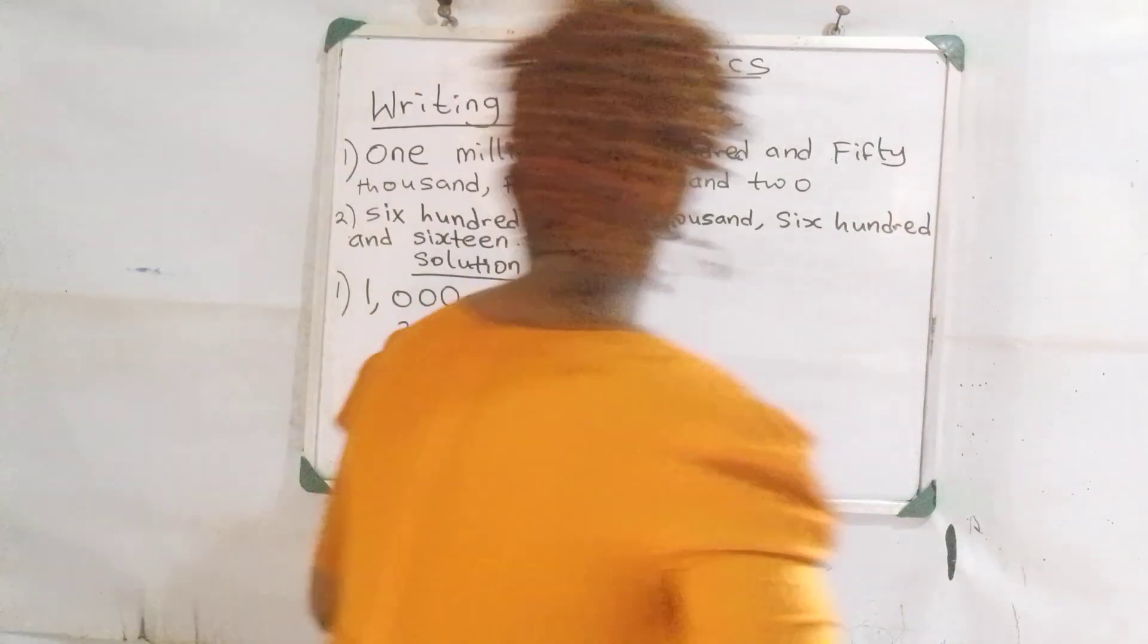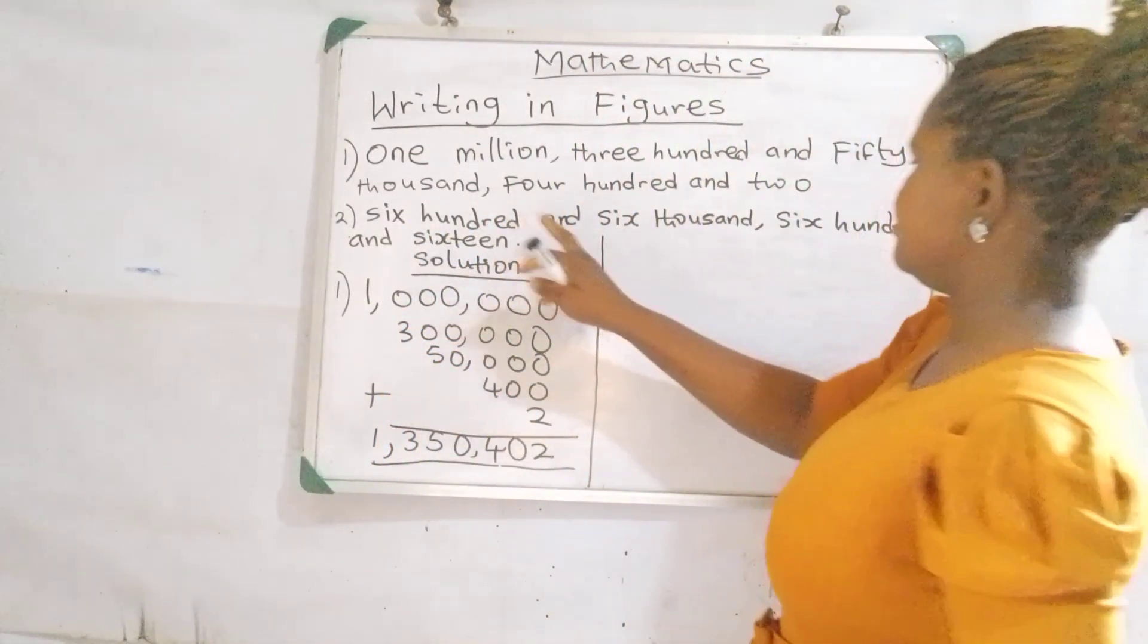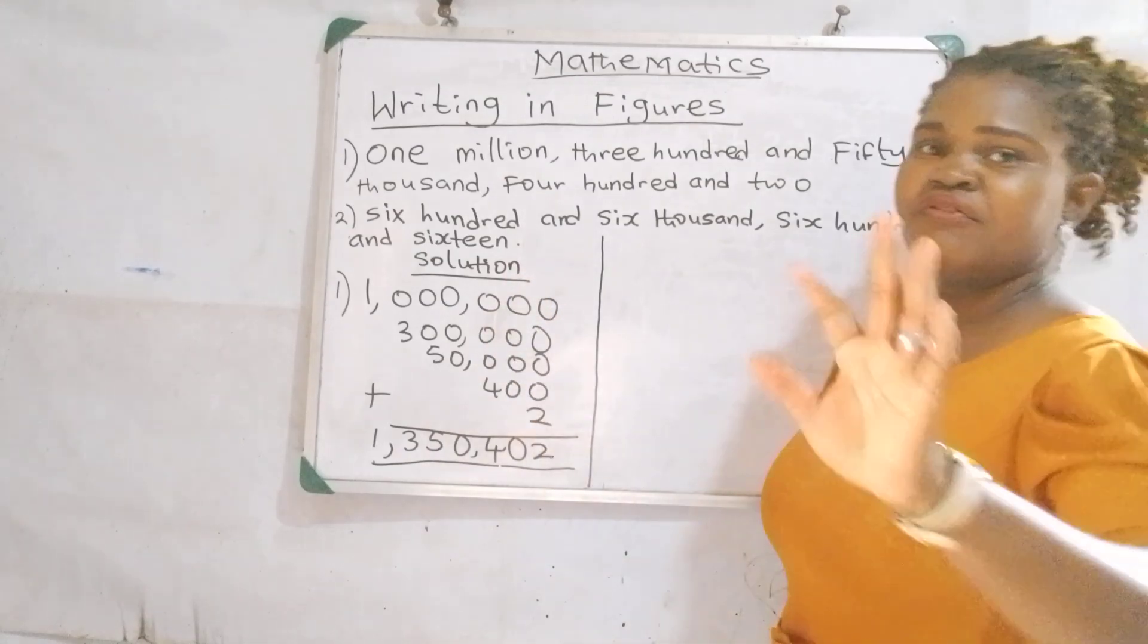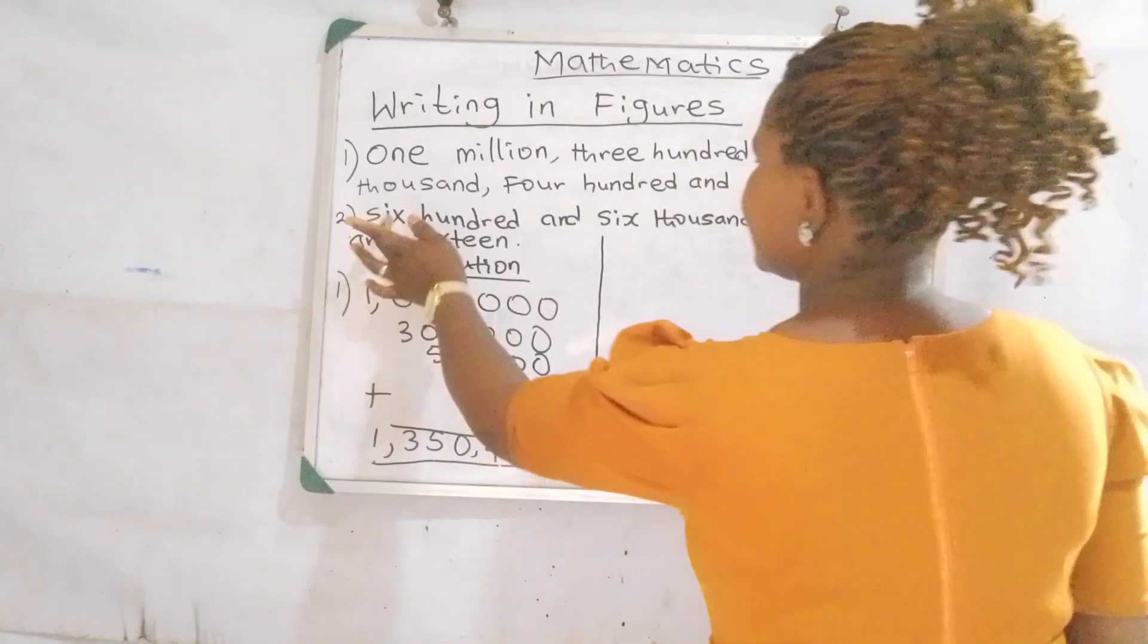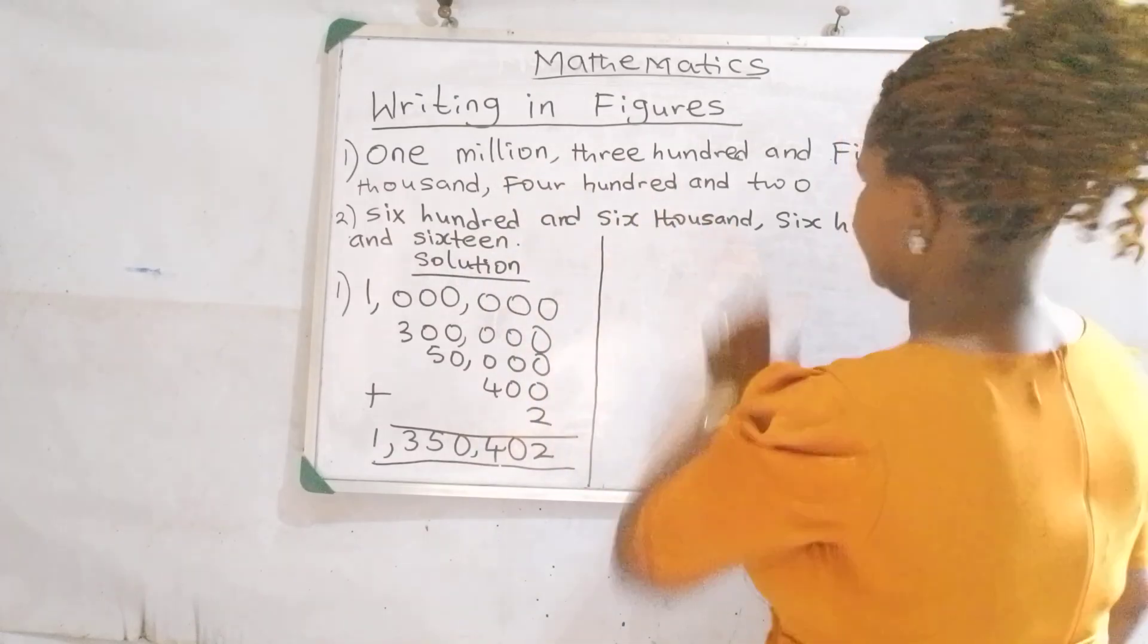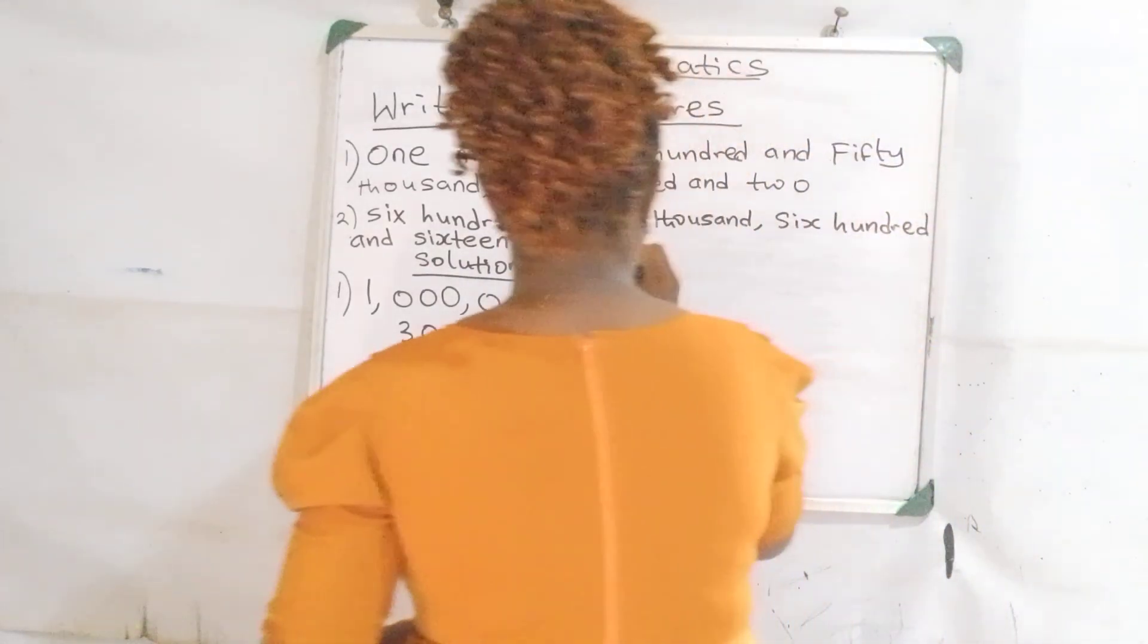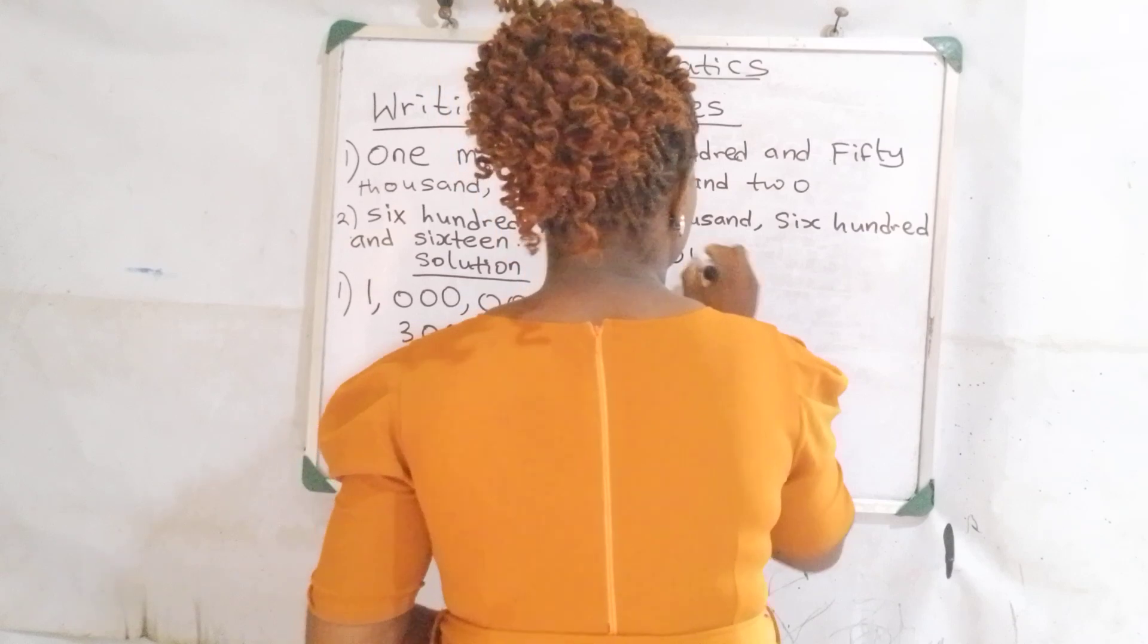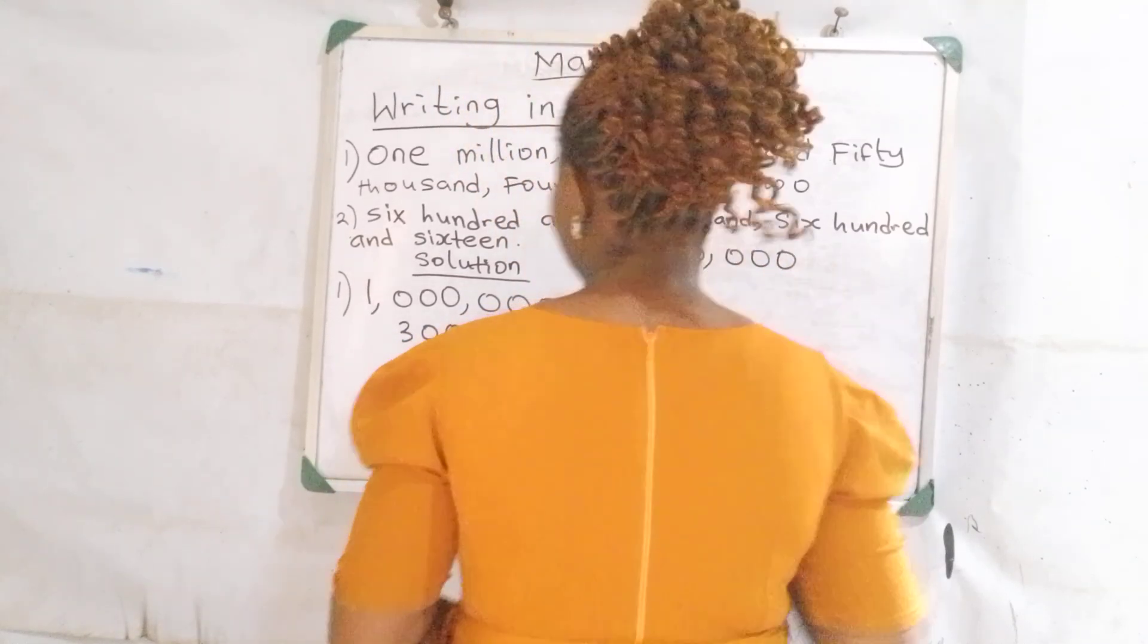Now let's take the second question. 606,616. The first thing we take here is how to write our 600,000 because it's in 1,000. Number 2: 600,000.